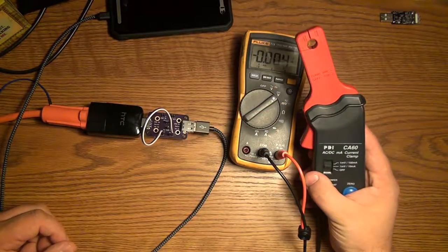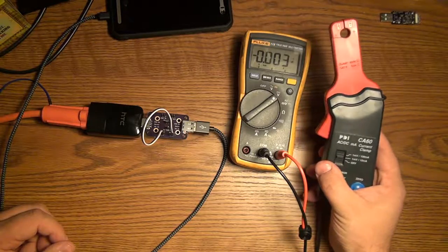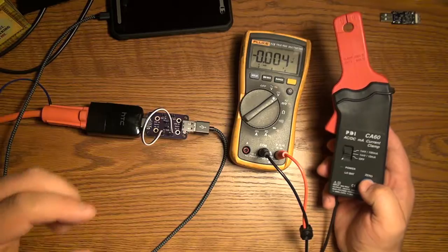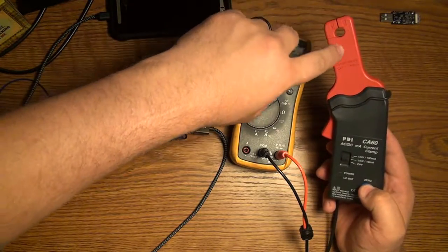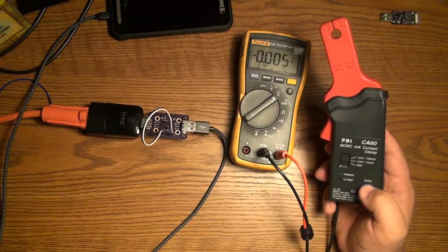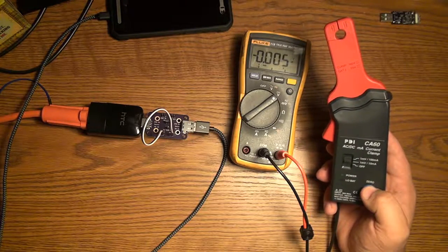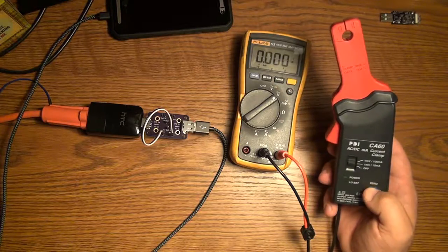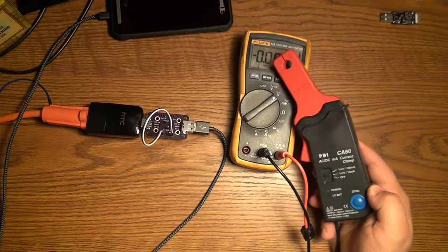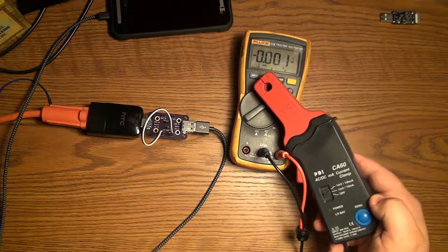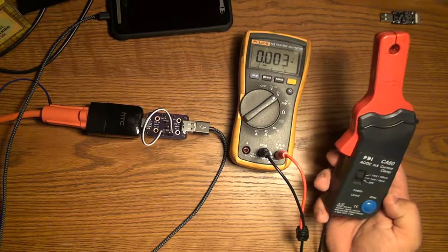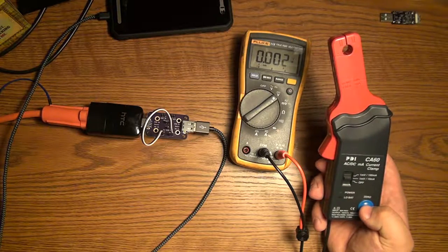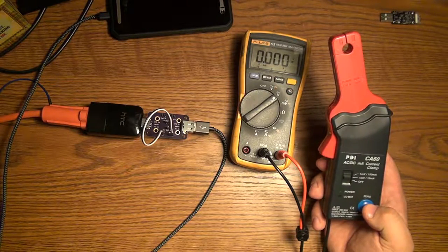So one thing to note about meters like this is that you have to zero it. That's what this big blue button is about. These meters have a tendency to pick up stray magnetic fields and all kinds of junk around you. So before using it, you have to zero it. So when you push the button, the meter went to zero. And you can see that as you kind of move it around, it'll pick stuff up. So it doesn't hurt to zero it right before you do a measurement.